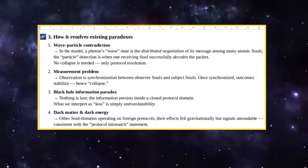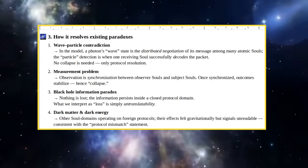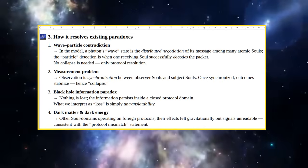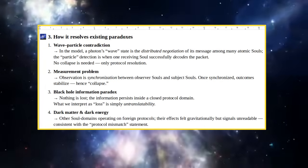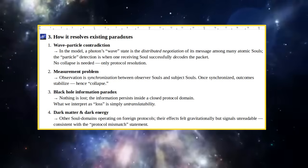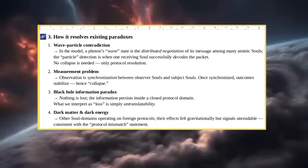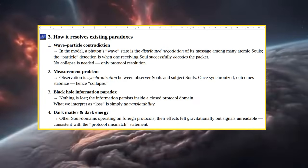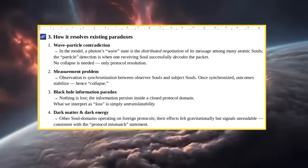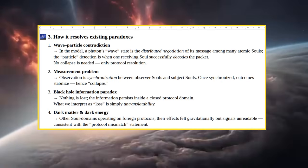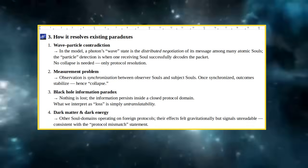Milky Way 3: How It Resolves Existing Paradoxes. Wave-Particle Contradiction: In the model, a photon's wave state is the distributed negotiation of its message among many atomic souls. The particle detection is when one receiving soul successfully decodes the packet. No collapse is needed, only protocol resolution.